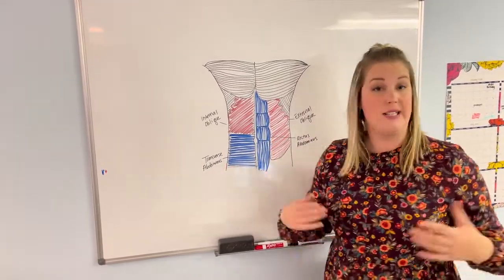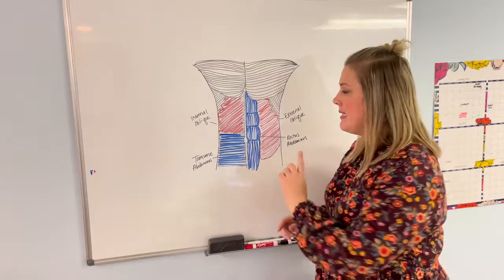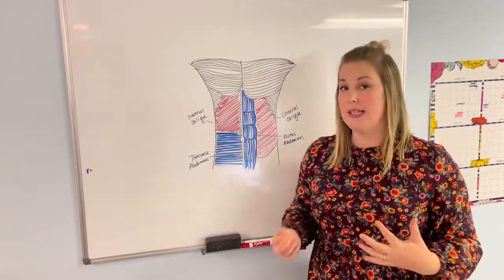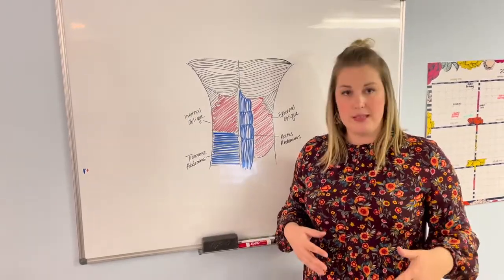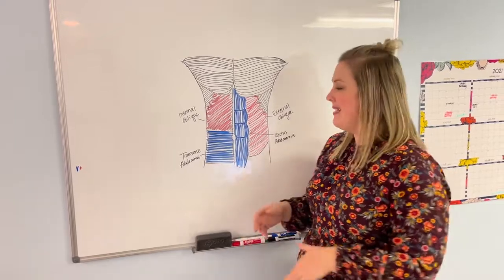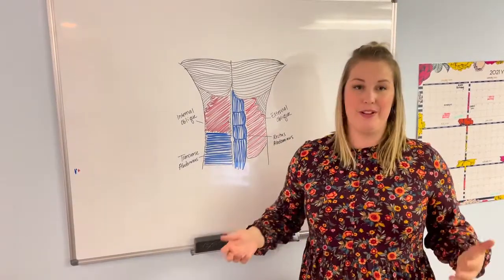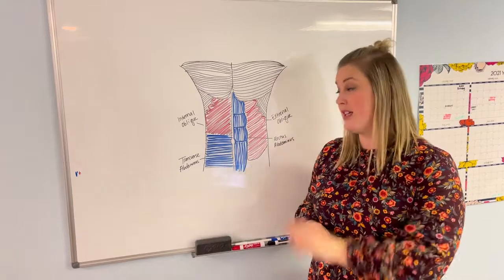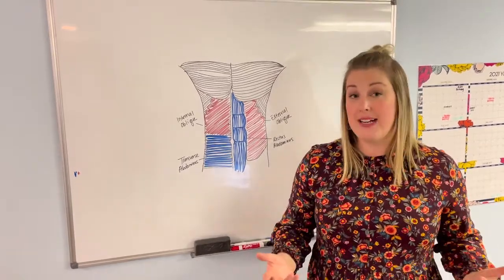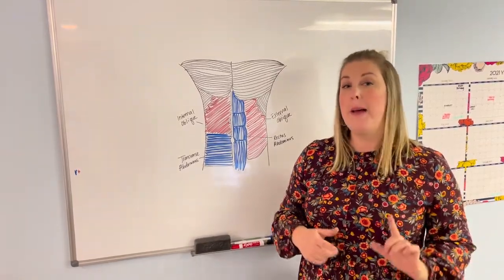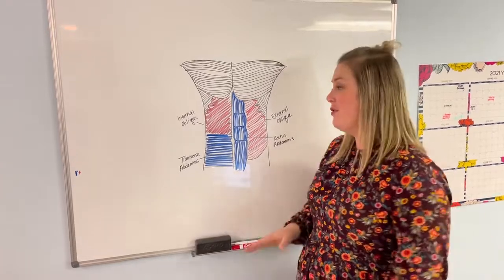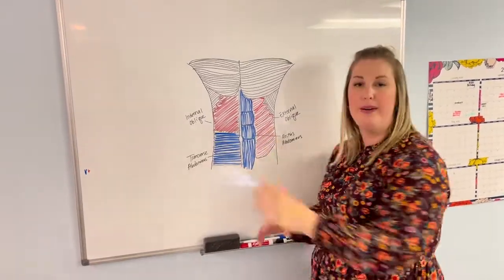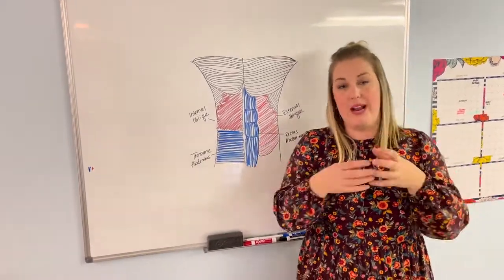So the transverse abdominis or TA for short is the muscle that we like to target a lot for core stability, core strength, because that is the muscle that's going to give you the most bang for your buck. You can check out some of our other exercises on what you can do for that, but it helps you visualize this muscle wrapping around like a corset and pulling everything in.